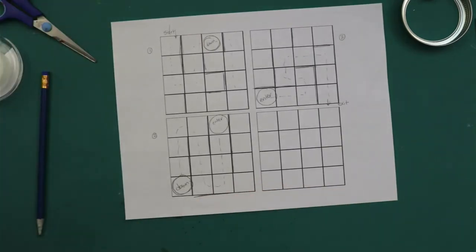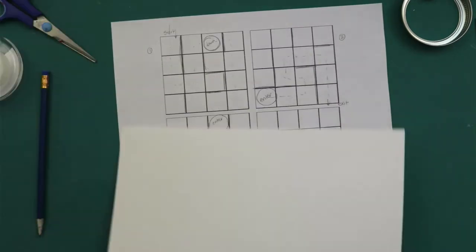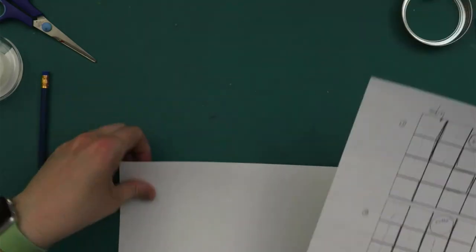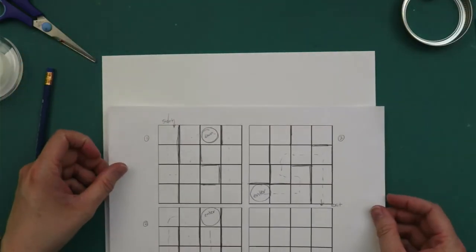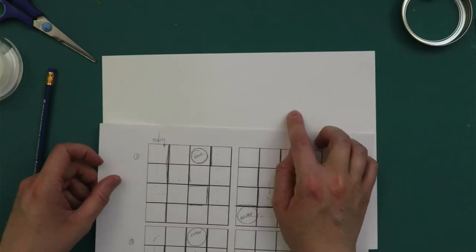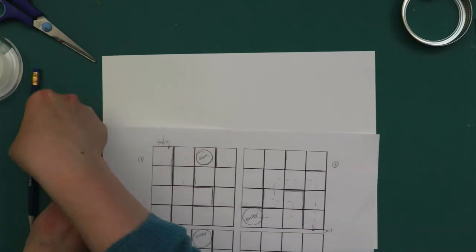So let's trace our maze design onto the cardstock and then cut out some walls and start taping it together.